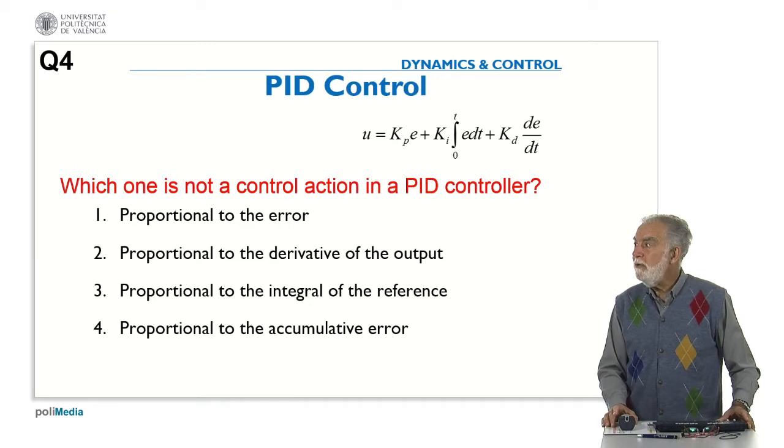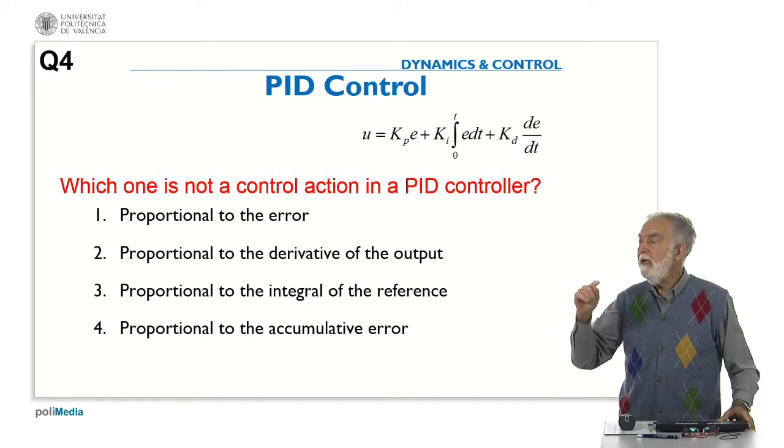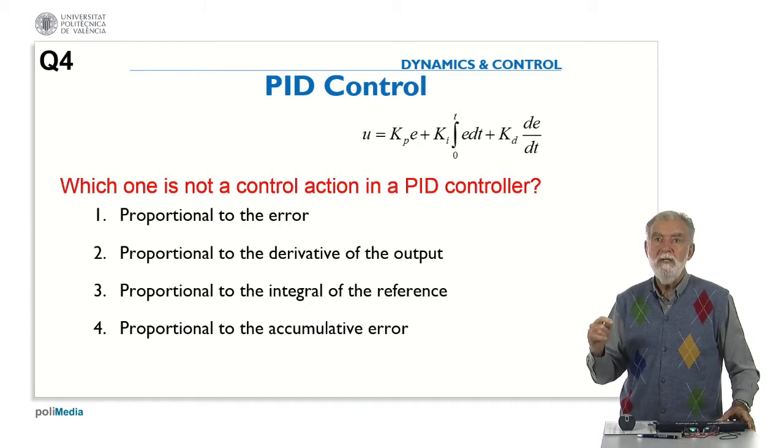Is it proportional to the derivative of the output? Well, in fact the third term is the derivative of the error. But if the input, the reference is constant, the derivative of the error is proportional to the derivative of the output.